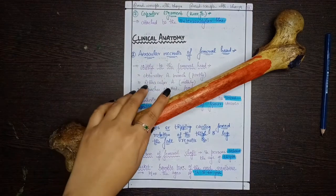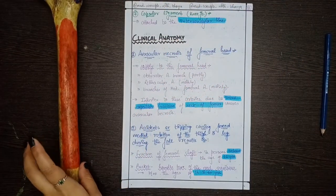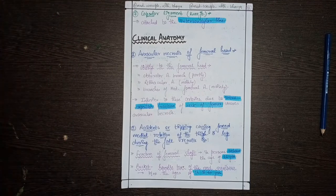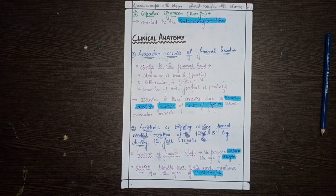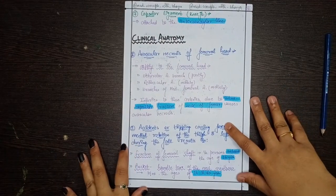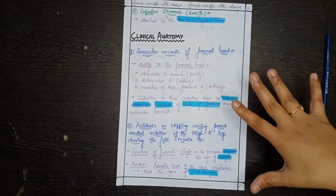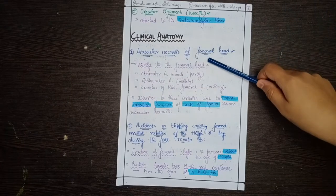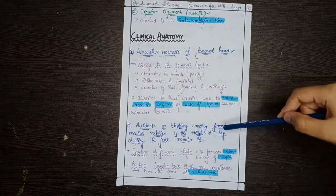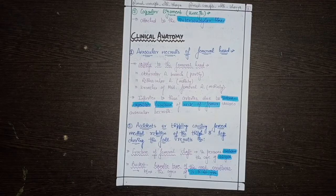We are going to talk about the clinical anatomy of the femur bone. Since we don't need the bone model here, I'll be removing it from the frame. Today we are going to cover the clinical anatomy with the help of notes, and we are going to see three clinical conditions in total.